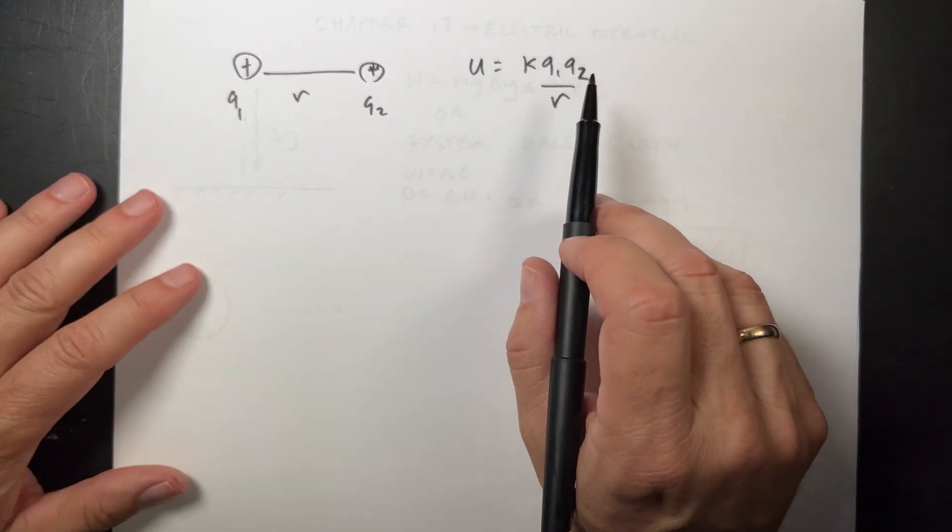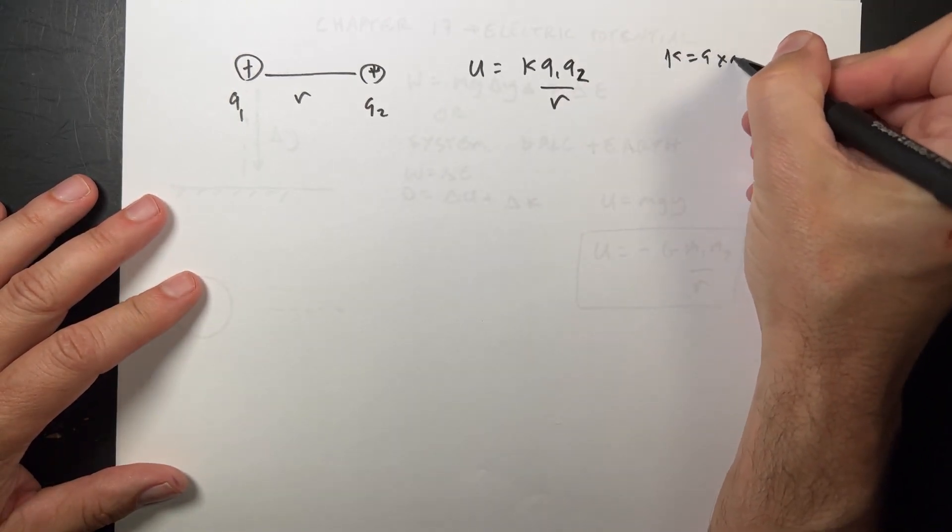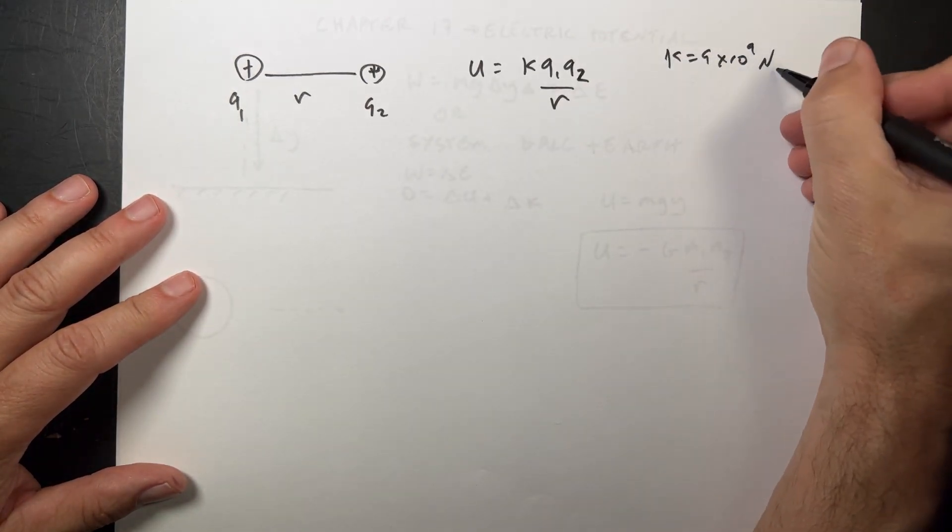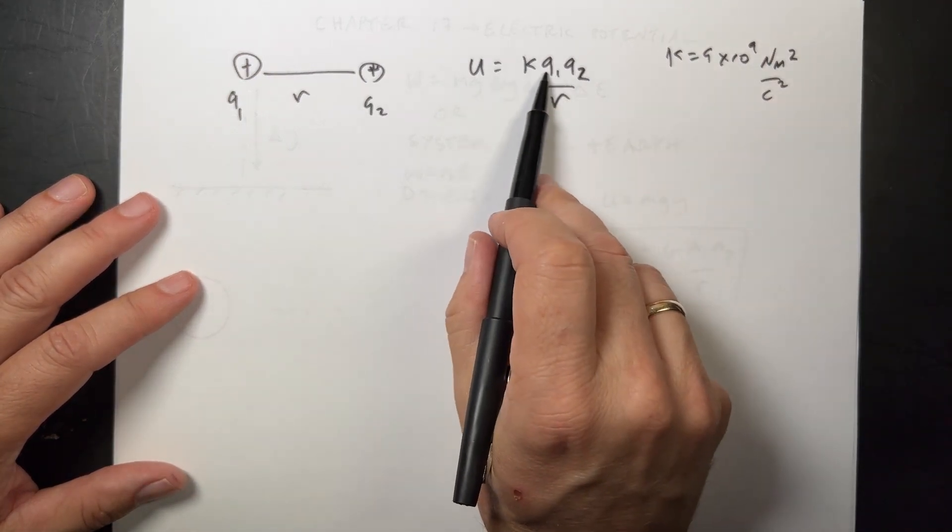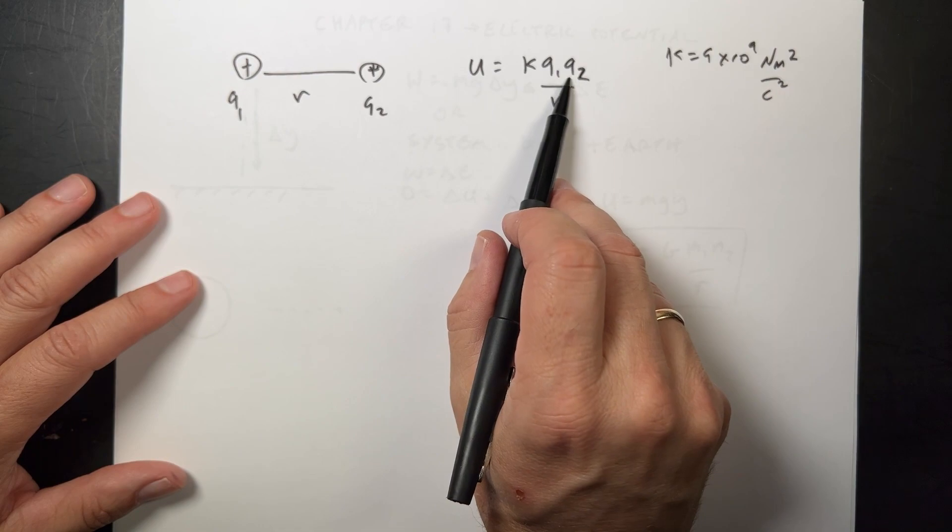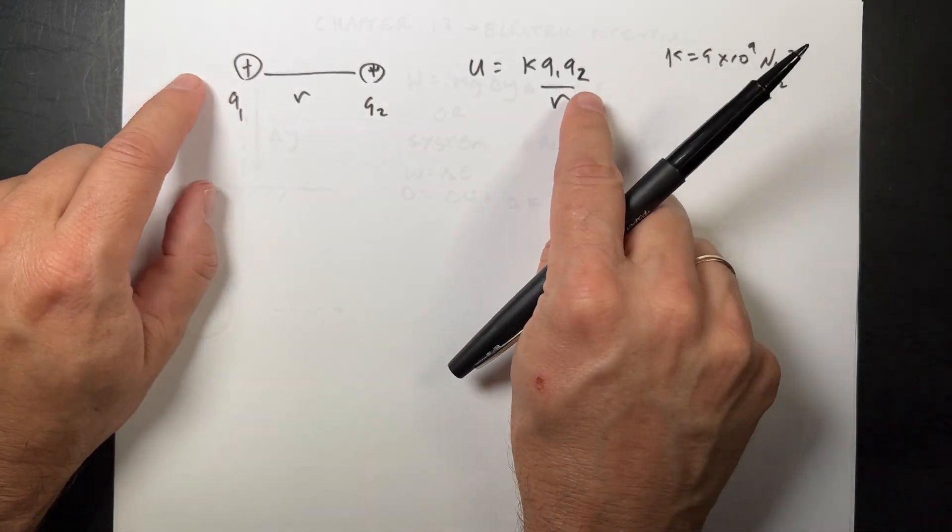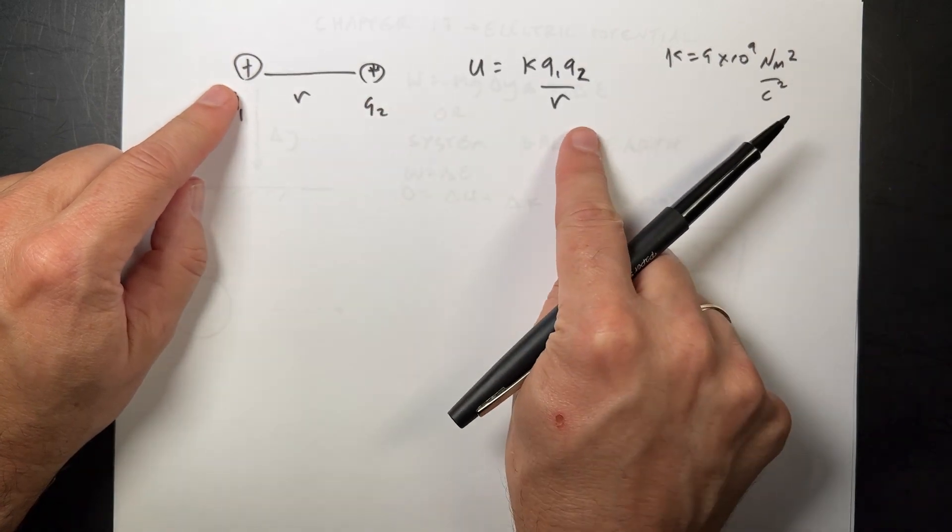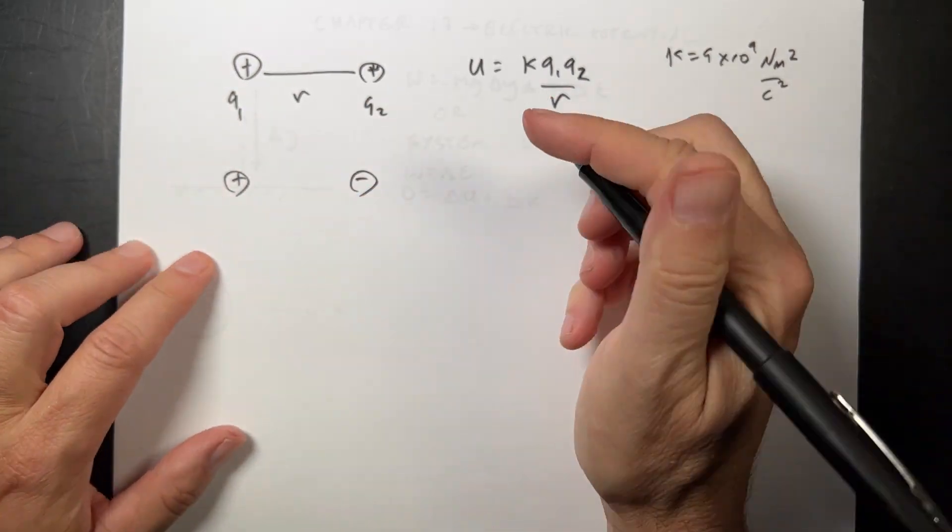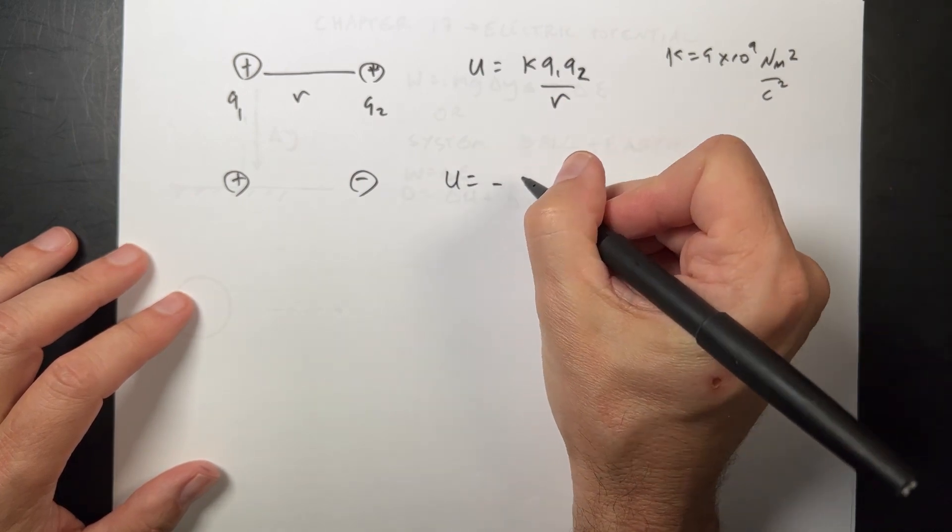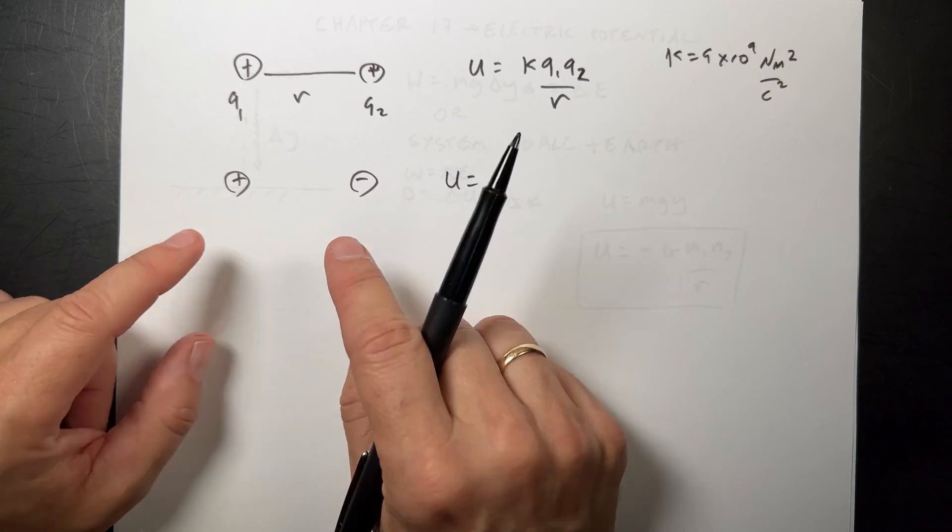Other than the constant k, k equals 9 times 10 to the ninth newtons meters squared per coulomb squared. Other than that, q can be positive or negative. So if these are both positive, this is a repulsive force, and so the potential is actually positive. If one of them is negative, then I would get u as also negative, because one of these would be negative, and it would be an attractive force. Just like the gravitational potential.